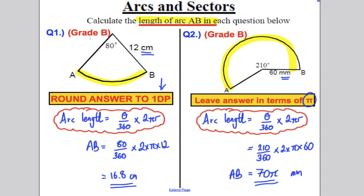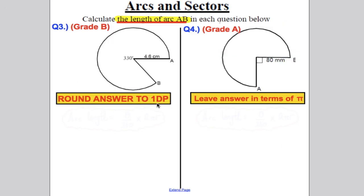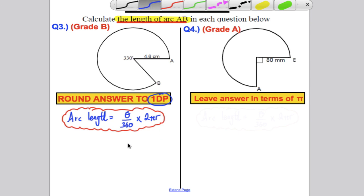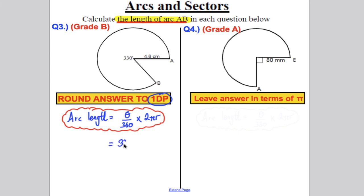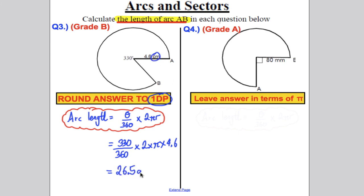Question 3 is the same approach and we're asked to round to one decimal place. The arc length = (θ/360) × 2πr, so it equals (330/360) × 2 × π × 4.6. Typing that into the calculator gives 26.5 centimetres.